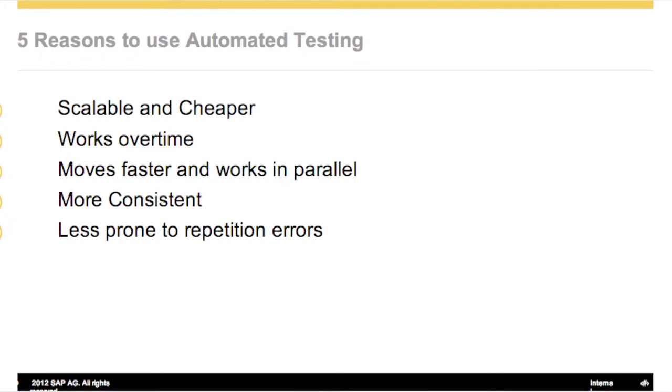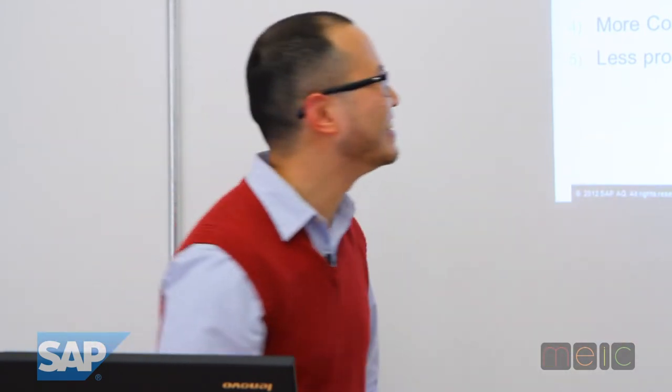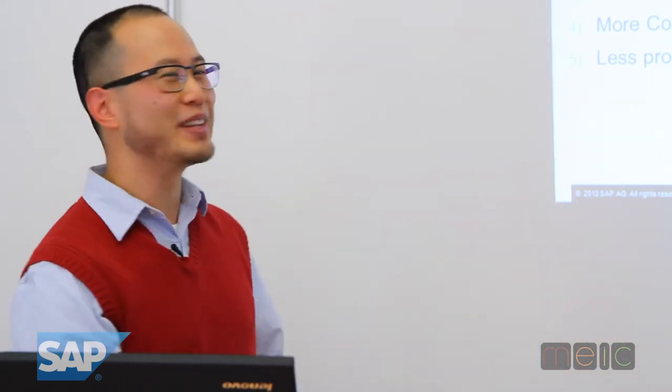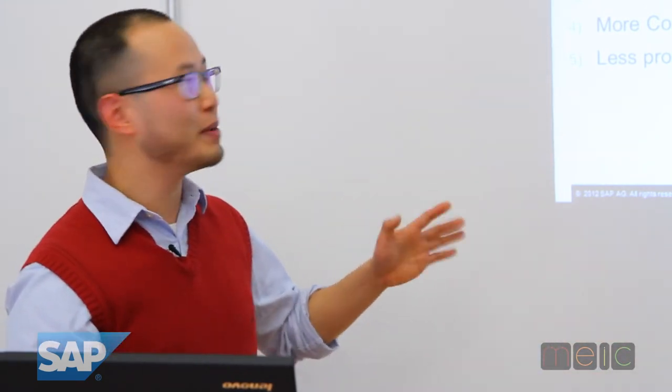The great thing about automated tests is they work over time. You don't have to convince them or browbeat them — they work when you tell them to. Jump, how high? Start? Sure. Start again? Sure. Stop, start? Sure. Run in parallel five times? Sure. Greatest employee ever, right? Automated tests work over time, and this is great when you're in a time crunch.